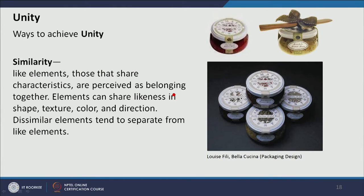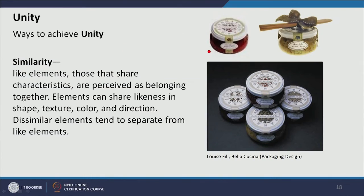The next way to achieve unity is similarity. If there are similarities in the elements of design, we perceive the composition as unified. In this packaging design example, different packages have different names, colors, and products, but still unity is achieved through the arrangement of elements. The shape of the packaging, labeling, typography, and texture are all the same, creating unity among the product range and communicating brand identity.